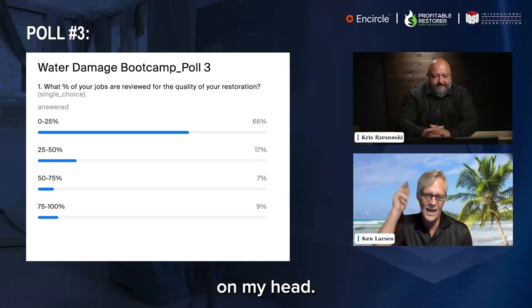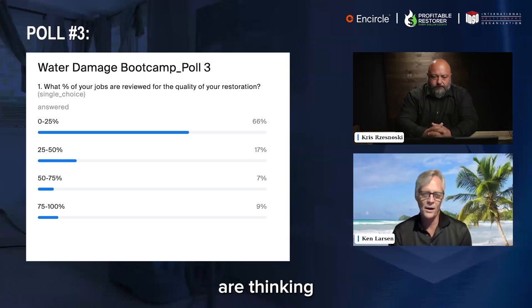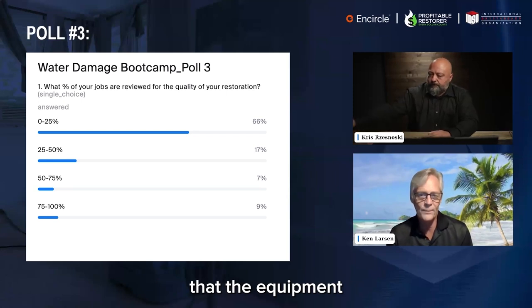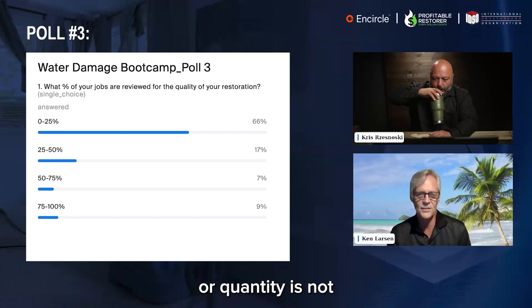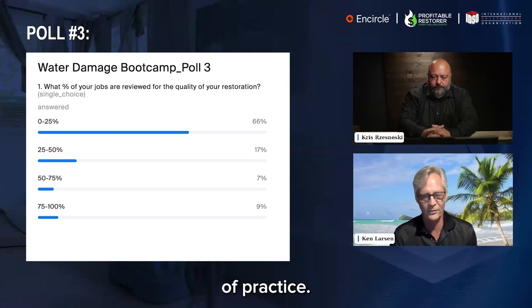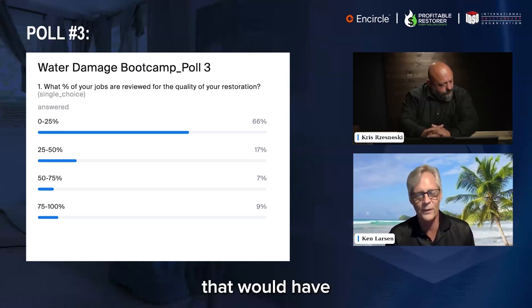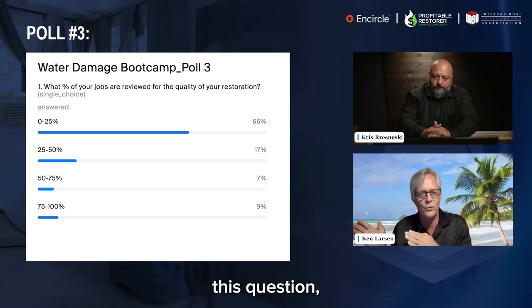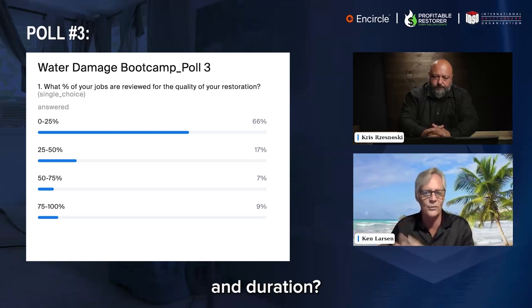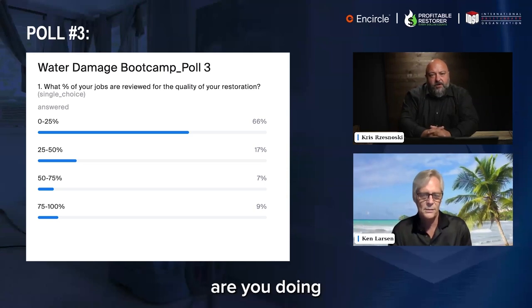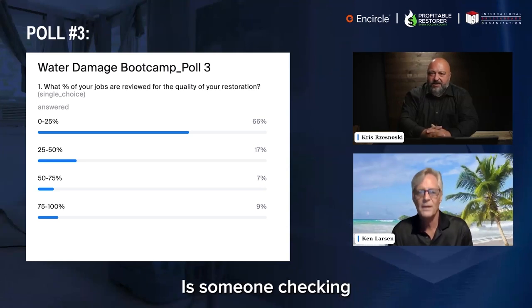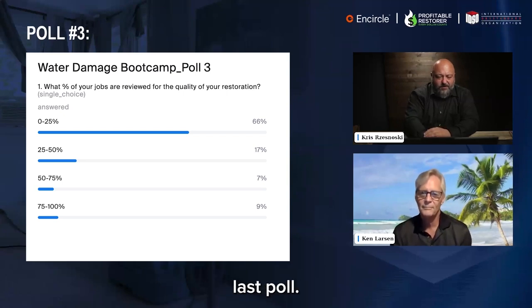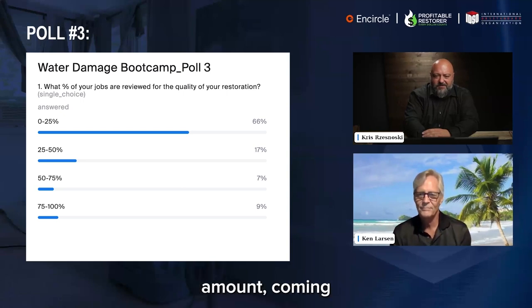Ken raises an important point: how many people reading this question think that when a file is reviewed for quality, equipment use, duration, or quantity is not a reflection of quality — but rather of practice? The drying strategy with a certain number of pieces of equipment for extended time — is that a quality challenge on the drying? The question was really about quality: are you doing proper decontamination, is someone checking whether a category two is properly handled? Those numbers seem similar to last year. Thanks for participating — huge participation coming in, really appreciated.